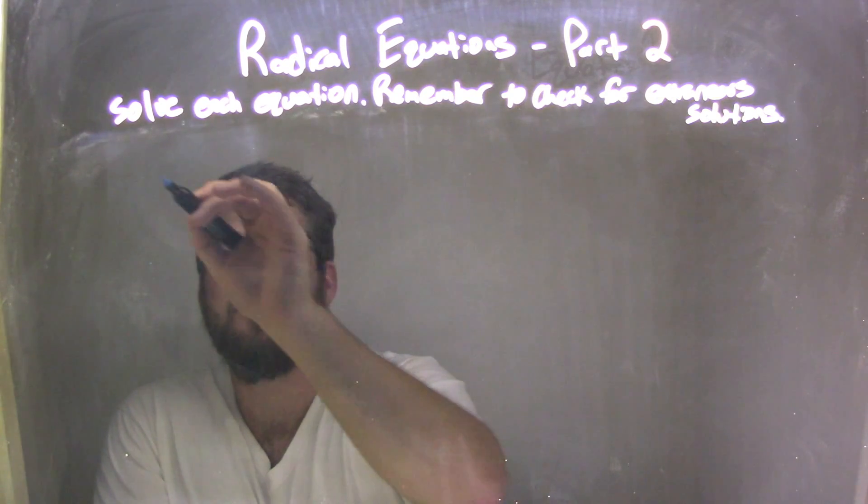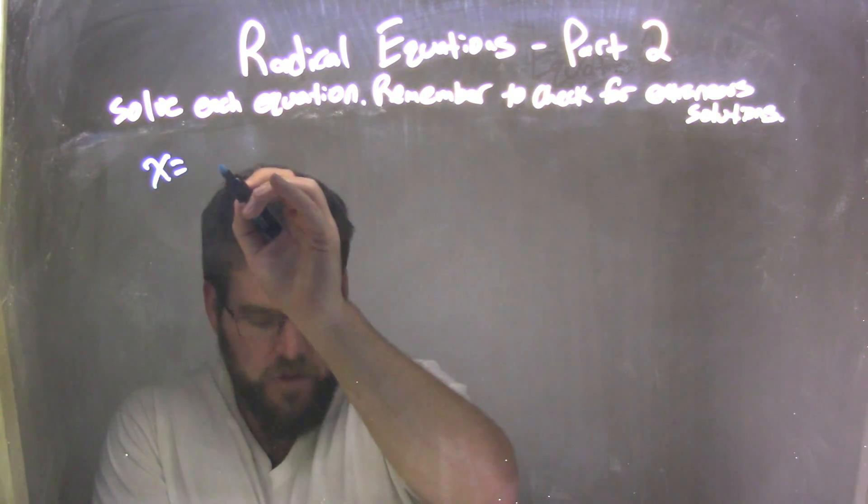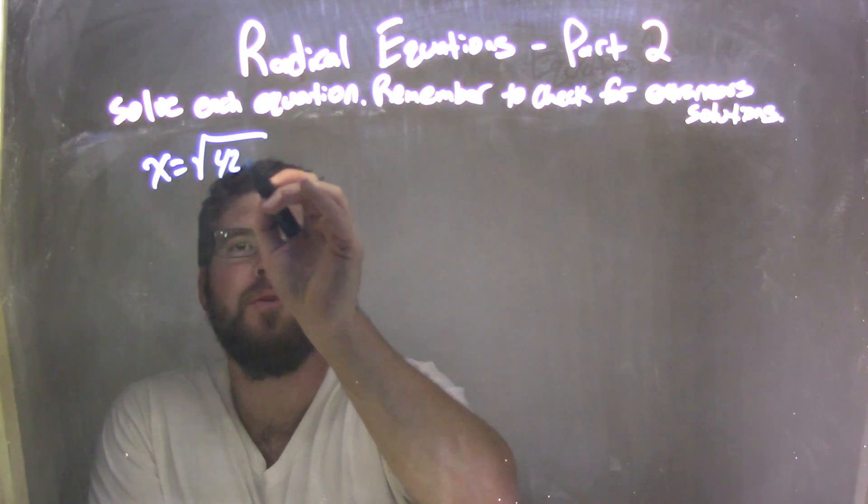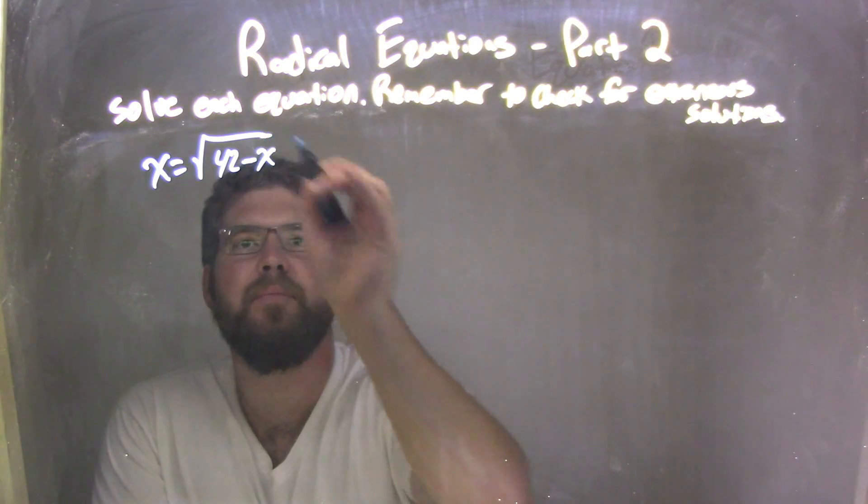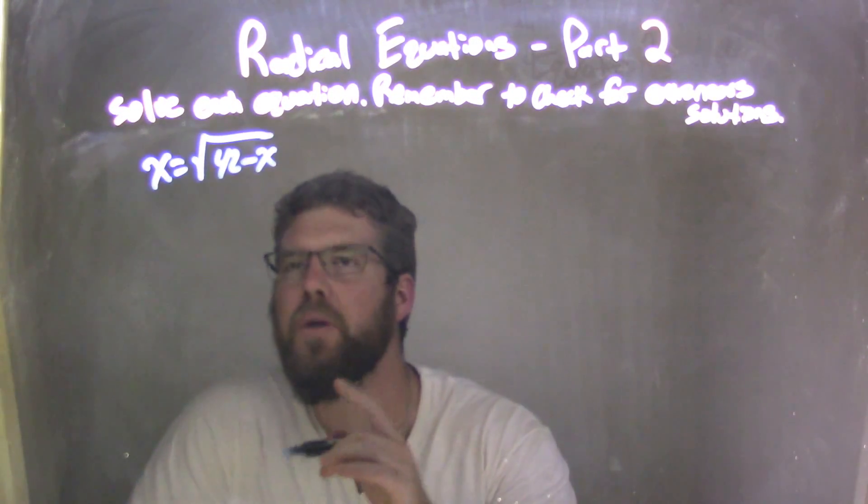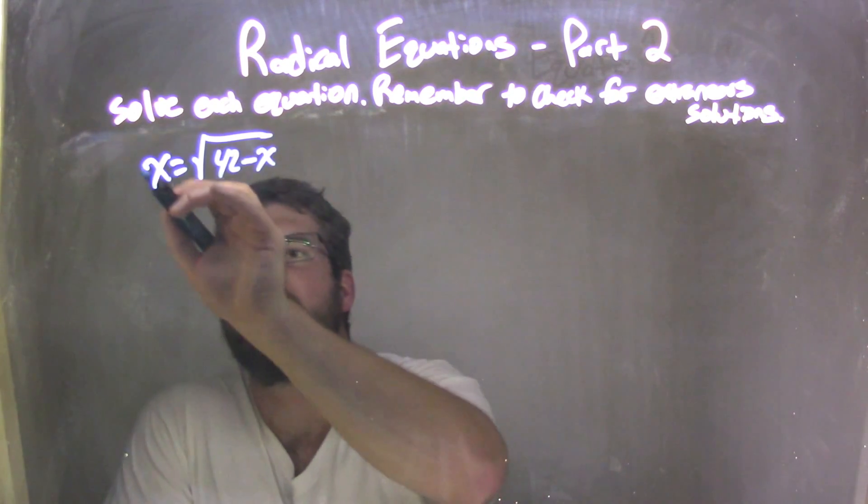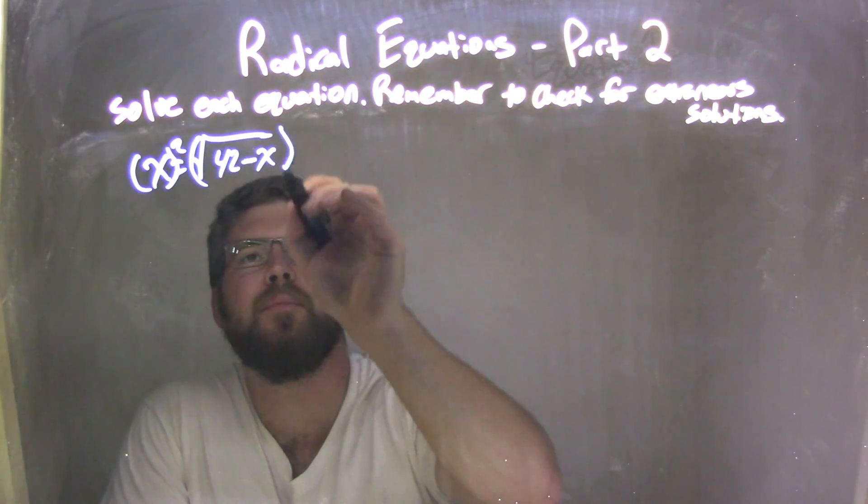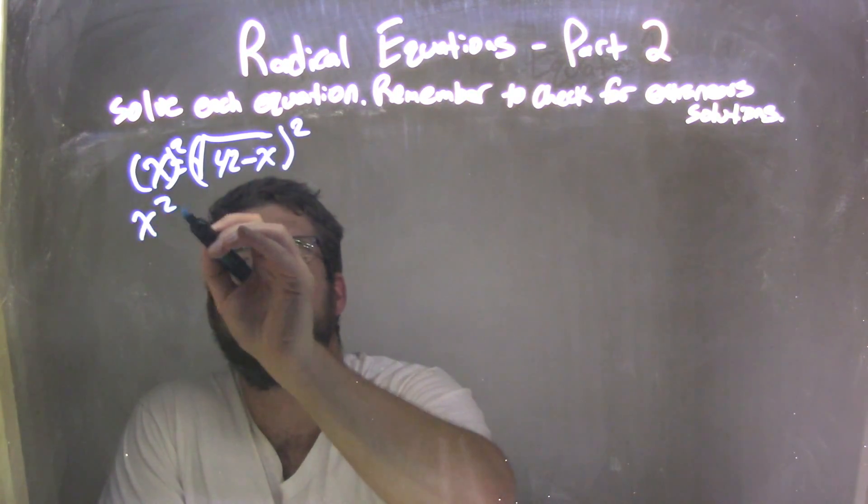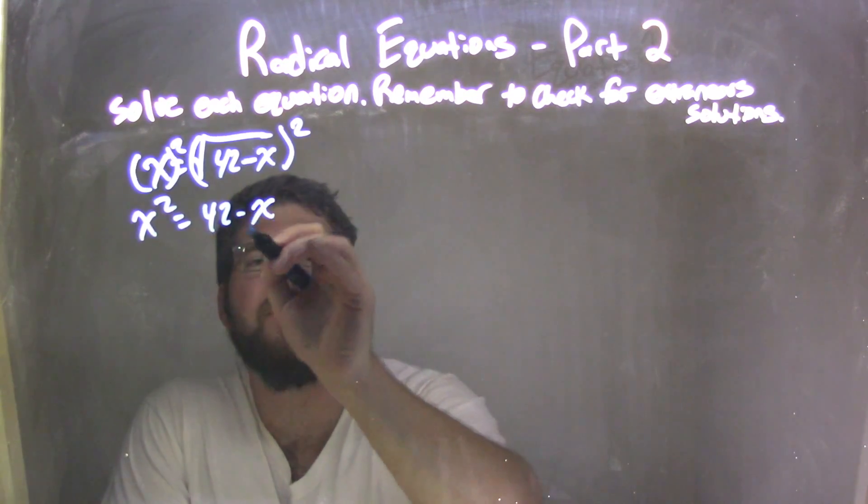If I was given this equation, x equals the square root of 42 minus x, what I need to do is square both sides to eliminate that radical. x squared is on the left, equals 42 minus x on the right.